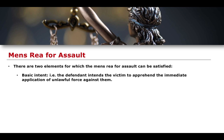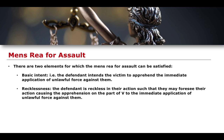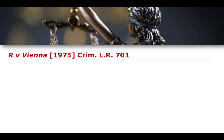In addition to basic intent, there is also the idea of ascertaining common assault through recklessness. The defendant is reckless in their action such that they may foresee their action causing the apprehension on the part of the victim of the immediate application of unlawful force against them. So even if they didn't intend to cause the victim to apprehend immediate unlawful force, if they acted in a way they should reasonably foresee would cause somebody to apprehend immediate unlawful force, this would also constitute the mens rea for assault on the basis of recklessness.